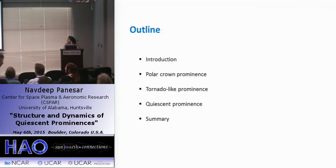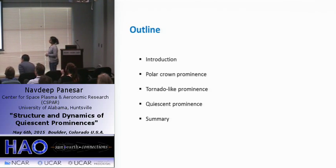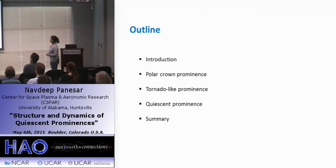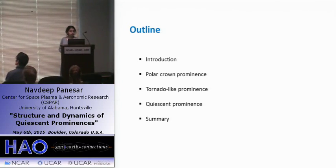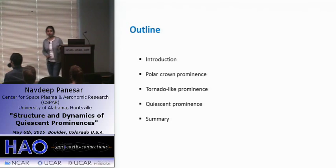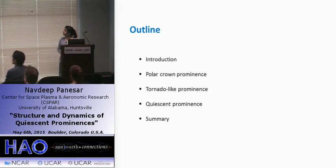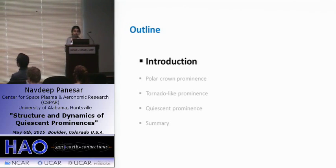Here is the outline of my talk. First I will give a brief introduction about solar prominences. Then I will show observations of a polychron prominence and a tornado-like prominence — these two works I did during my PhD at Max Planck. In the third part I will show a prominence filament eruption triggered by a series of eight homologous eruptions. And at the end, a summary.